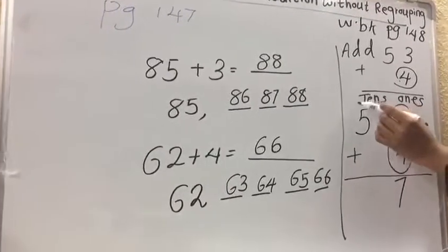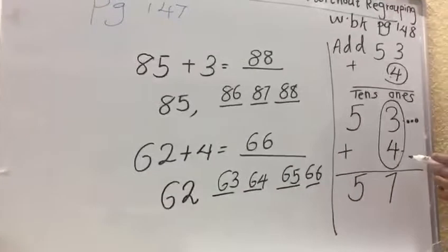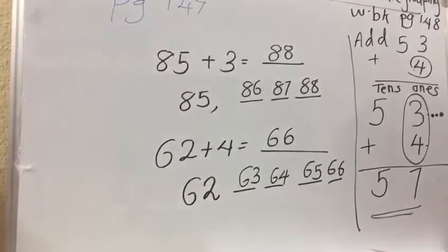Now the ones place, tens place having 5. We will put 5 here. 53 plus 4 equals 57.